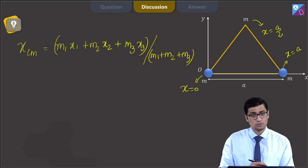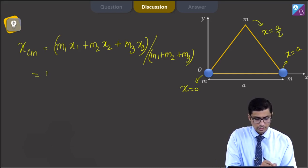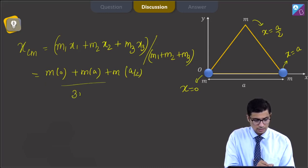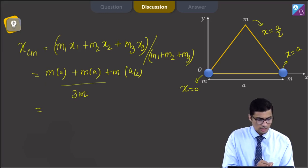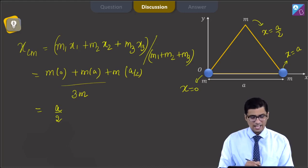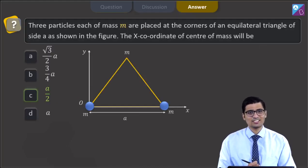Substituting the values: the x coordinate of center of mass equals m into 0 plus m into a plus m into a by 2, all divided by the total mass 3m, which equals a by 2. Hence, the correct answer is option C: a by 2.